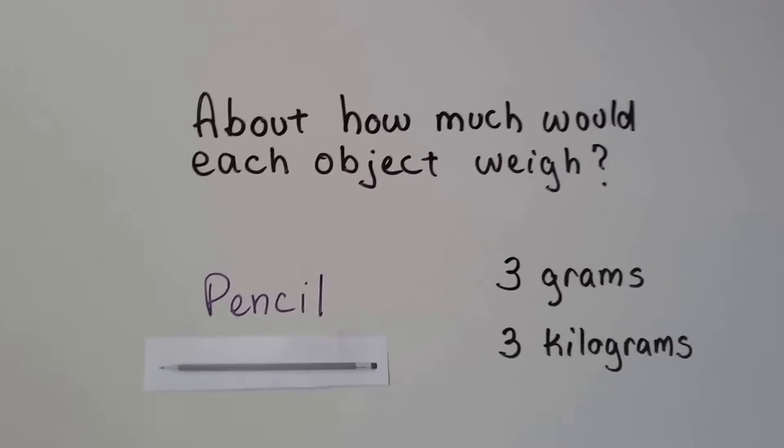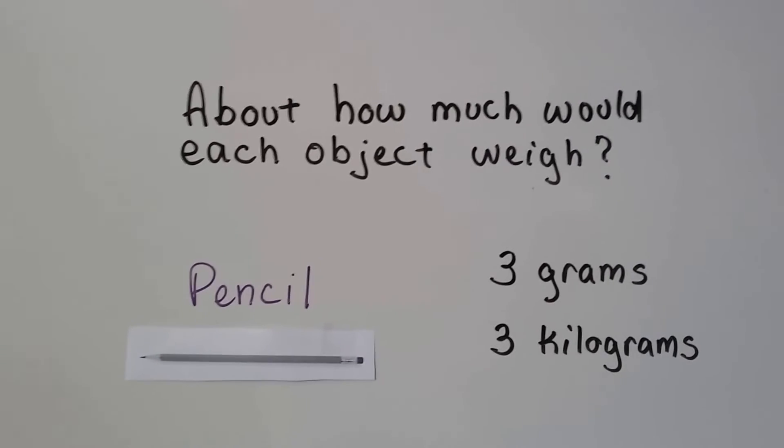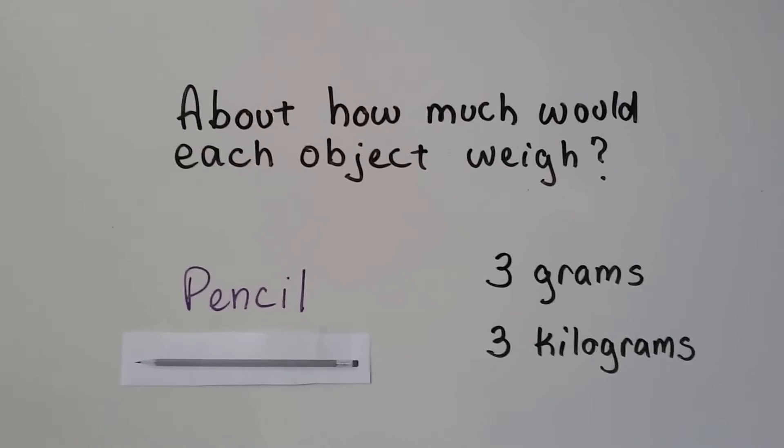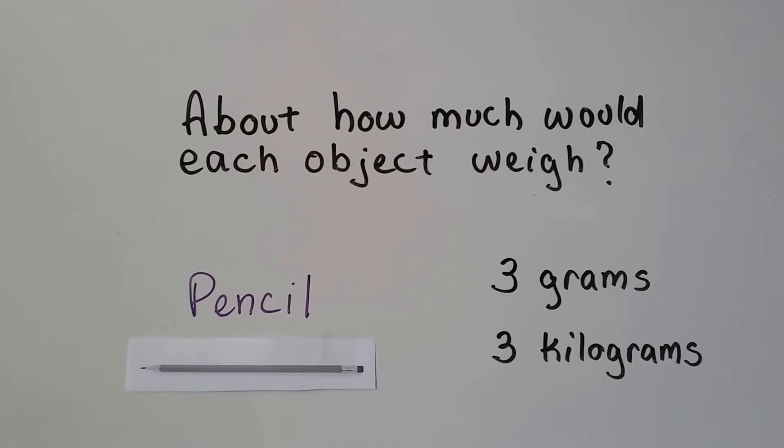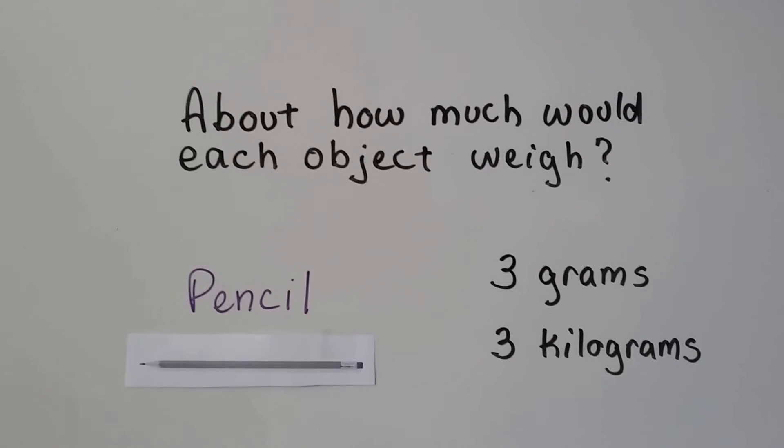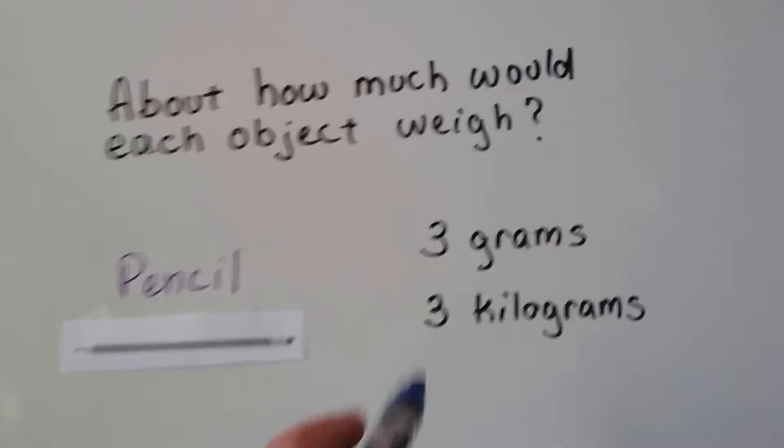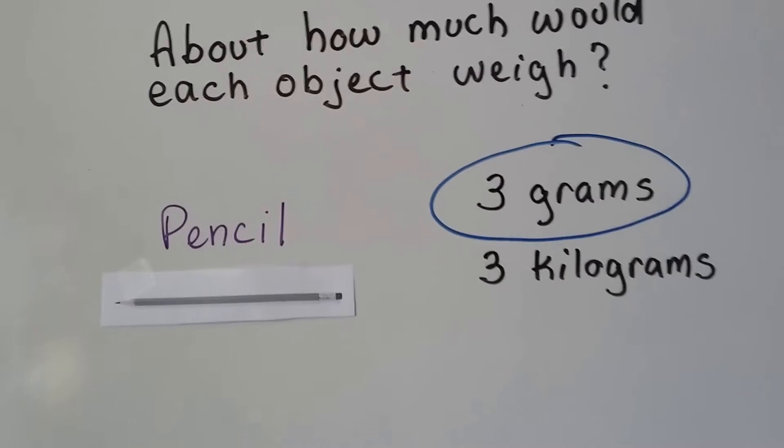All right, let's see about how much would each object weigh. Do you think a pencil weighs about three grams or three kilograms? Now remember, one gram is about the weight of a paper clip, and a kilogram is about how much a hammer weighs. So if you said three grams, you're right, because a pencil doesn't weigh very much, does it? It's just made of wood, and it's pretty light, isn't it?